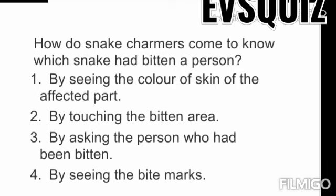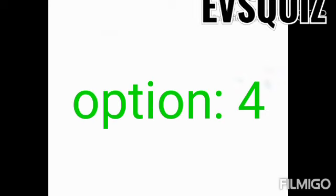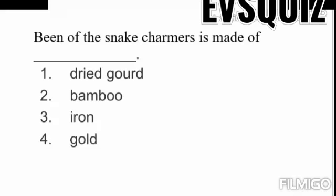The correct answer for how snake charmers know which snake has bitten is option number four — by seeing the bite marks. Next question: 'The bean of the snake charmer is made of ___.' Option one: dried gourd. Option two: bamboo. Option three: iron. Option four: gold. Very easy question for students. I hope you can all give the answer properly. Your time starts now.